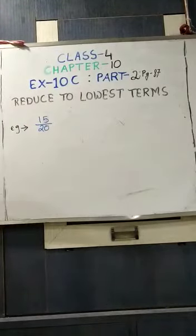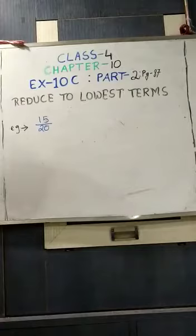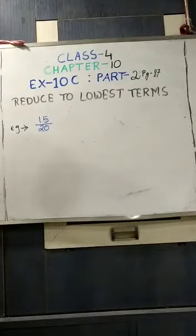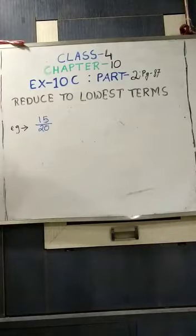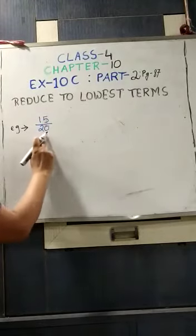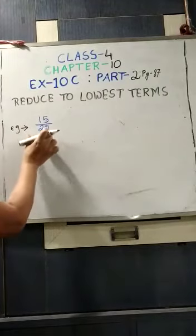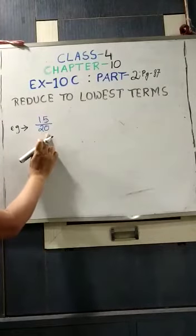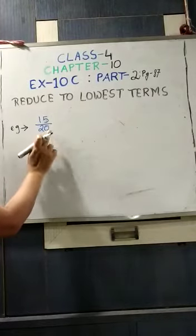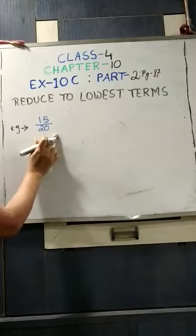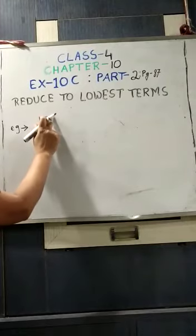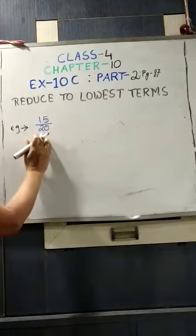This is a fractional number and we have to reduce it to its lowest term. I have told you repeatedly to learn the tables — if you learn the tables properly it would be easier to reduce a fractional number to its lowest term. Here you can see the numerator is 15 and the denominator is 20. In this process we have to divide the numerator as well as the denominator by the same number.